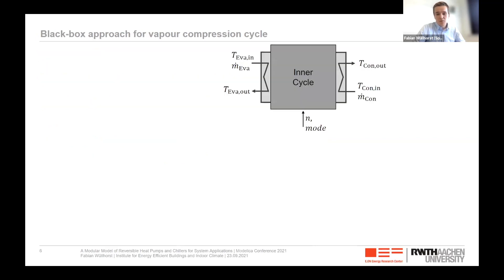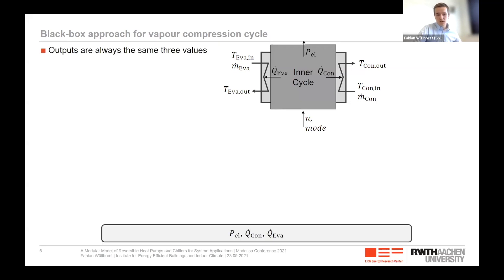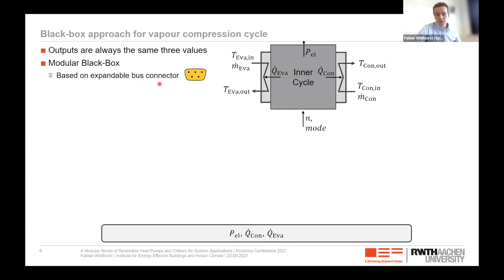We followed a black box approach for the vapor compression cycle. Looking at literature models, all have the same three output values: electrical power consumption, condenser heat flow, and evaporator heat flow. As all models share these three output values, we implemented a modular black box based on an expandable bus connector. Using this expandable bus connector, we can use any state from the actual device level — for example, inflow and outflow temperatures — to estimate these three values.